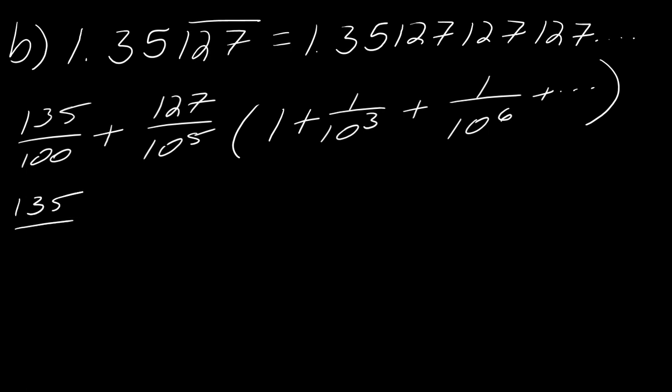Alright, so I've got this 135 over 100, and then I've got this sum. So I've got 127 over 10 to the fifth times 1 over 10 to the third to the n. So there's our sum.